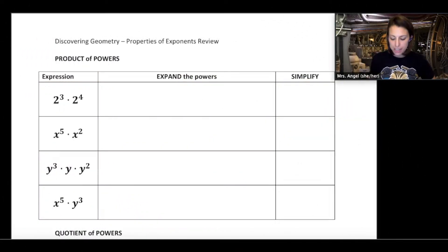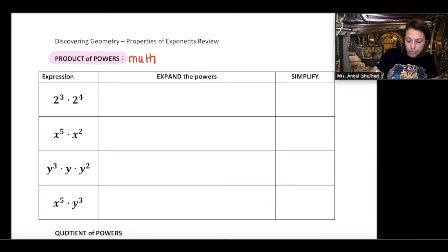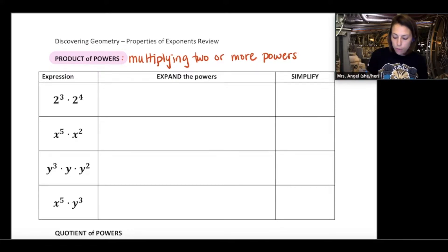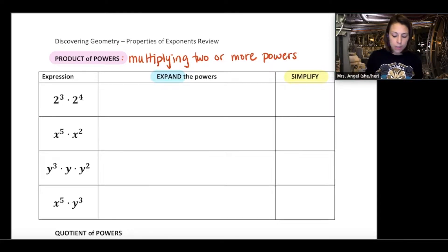The first property of exponents is called the product of powers. This refers to an expression where you are multiplying two or more powers. The steps for simplifying using properties of exponents are simple: first, expand the powers into products, and then simplify and write it as a single power.